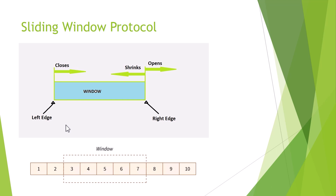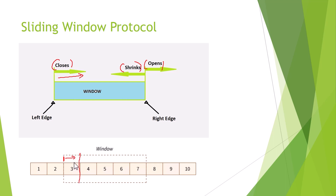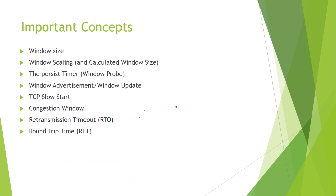A few key concepts: when the left edge moves to the right, the window is closing — that portion is done. Similarly, if the right edge moves to the left or inward, the window shrinks and becomes shorter. These are the important concepts related to window open, close, and shrink in TCP flow control.